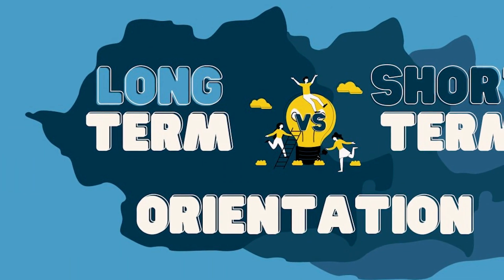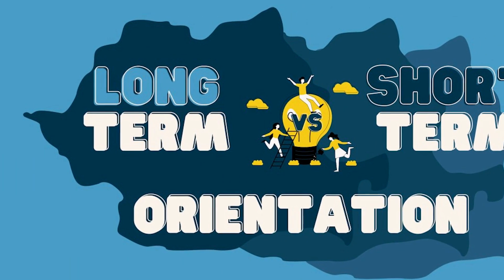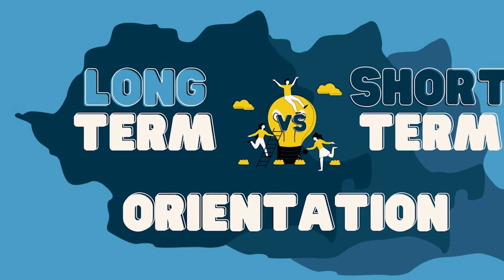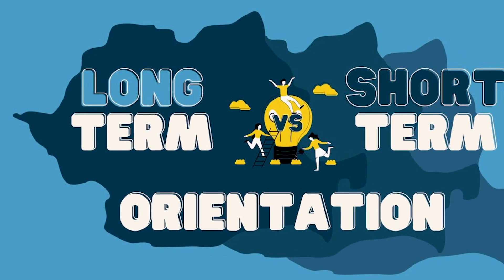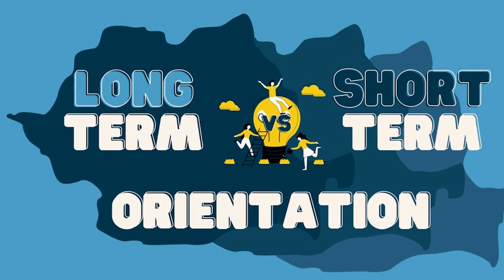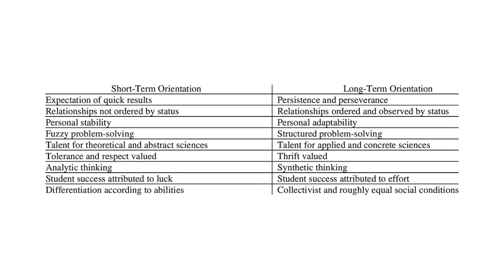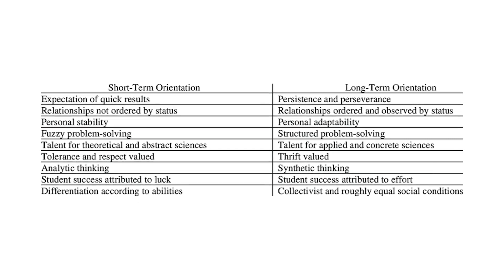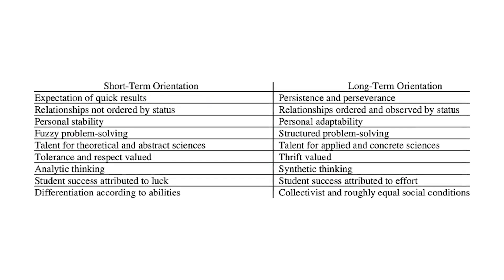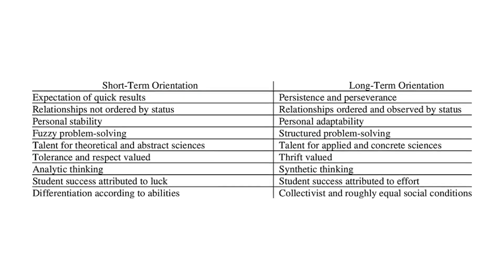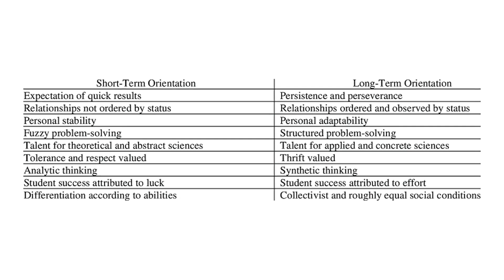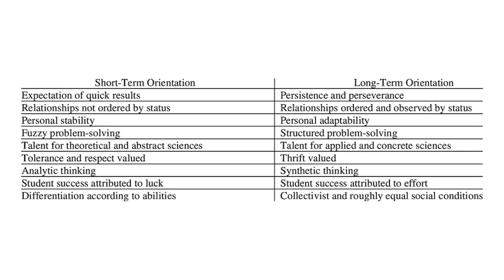Then there is long-term versus short-term orientation. This dimension examines how a given society views and focuses on maintaining long-term traditions and values or putting attention to short-term results. Long-term oriented cultures emphasize persistence and perseverance to grind it out, while short-term oriented cultures prioritize quick results and immediate gratification.